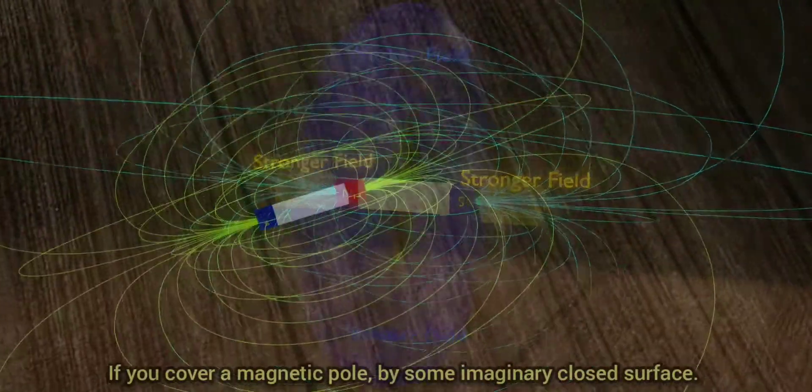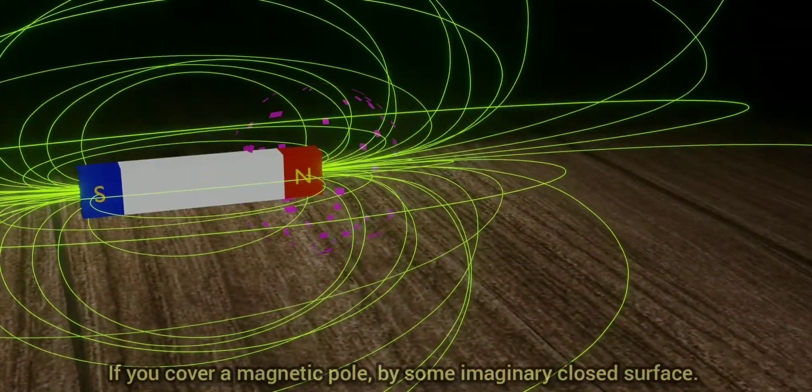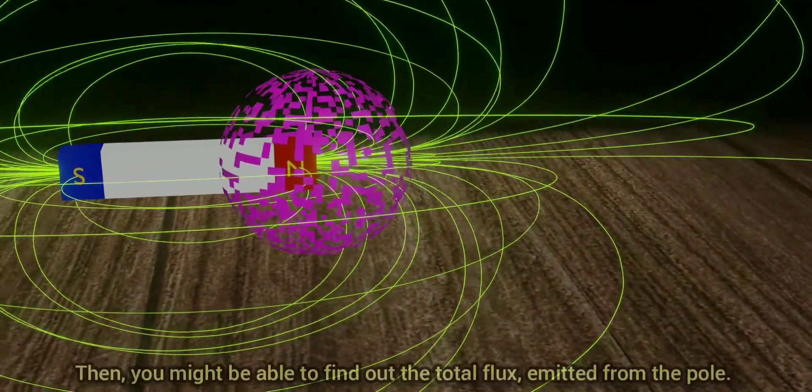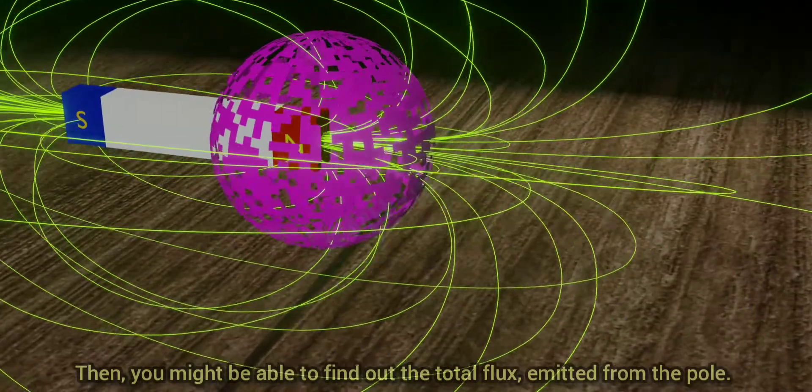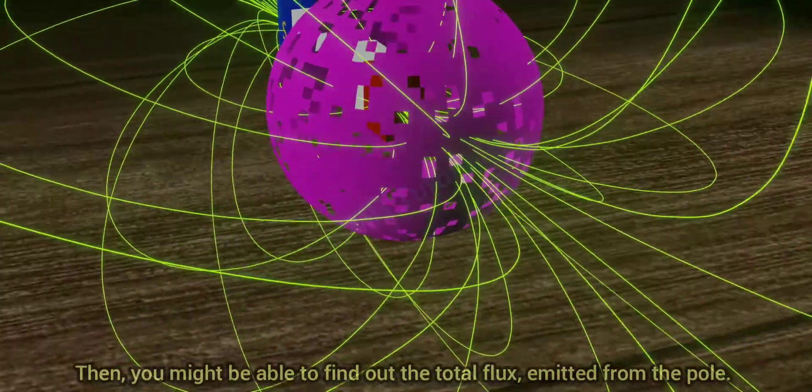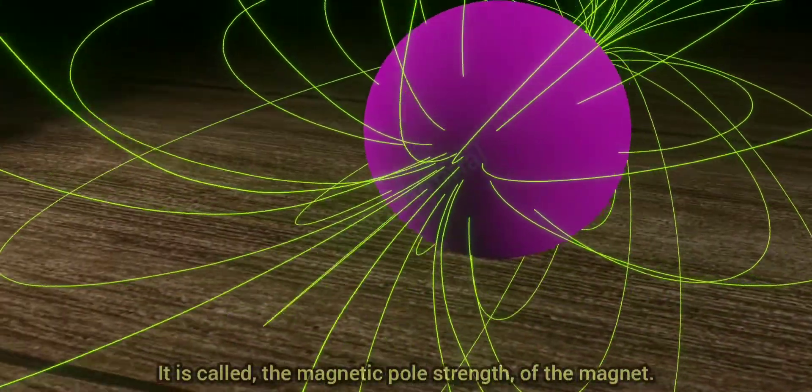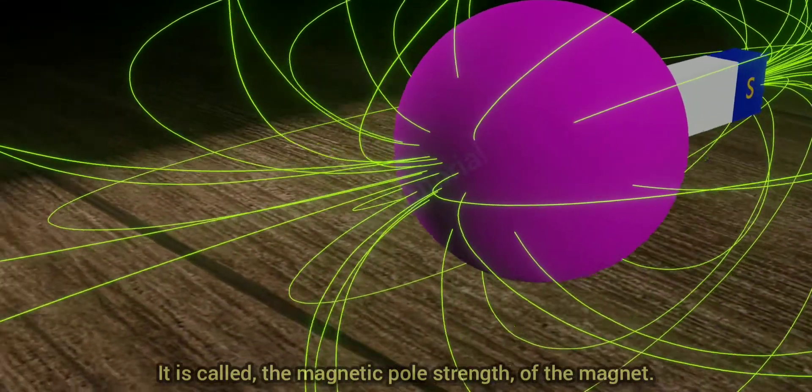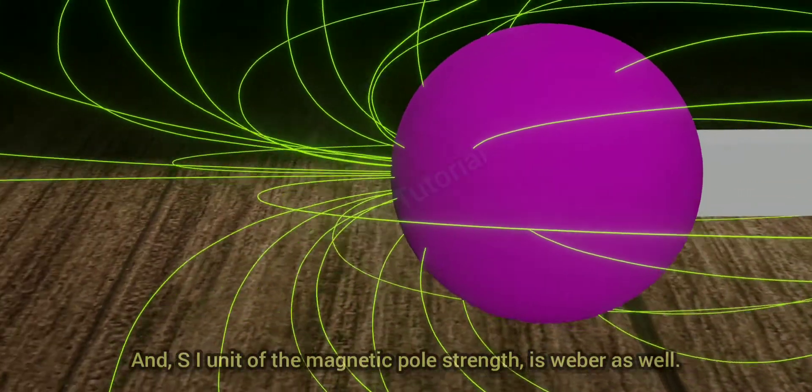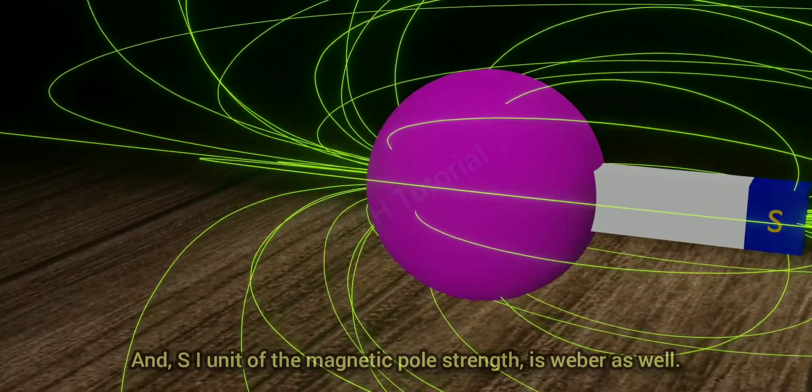If you cover a magnetic pole by some imaginary closed surface, then you might be able to find out the total flux emitted from the pole. It is called the magnetic pole strength of the magnet, and SI unit of the magnetic pole strength is Weber as well.